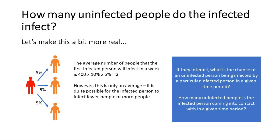It's worth noting that this is only an average. It's quite possible for the infected person to infect fewer people or more people — they could be a massive social butterfly infecting people left, right and centre, or a hermit who infects nobody.